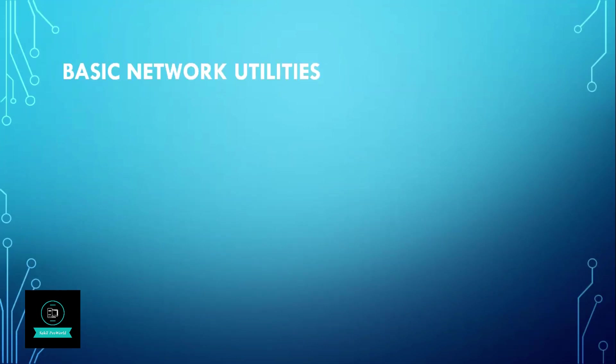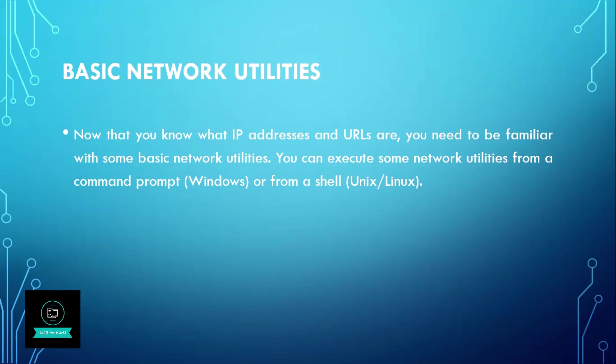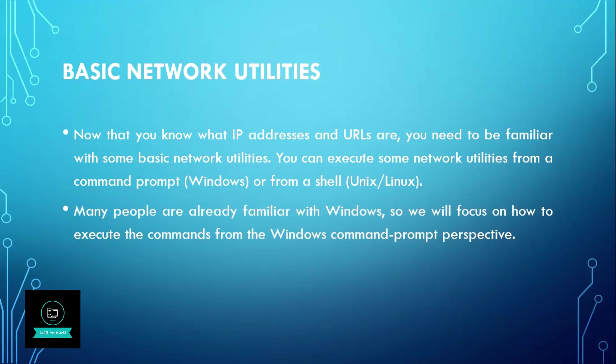Now start from basic network utilities. Now that you know what IP addresses and URLs are, you need to be familiar with some basic network utilities. You can execute some network utilities from a command prompt window or from a shell in Unix or Linux. Many people are already familiar with Windows, so we will focus on how to execute from the Windows command prompt perspective.